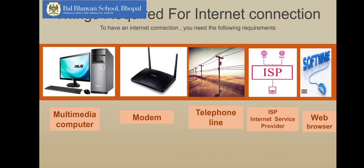Things required for an internet connection — there are a few things which are basically needed. First is your computer. Second is a modem, whose full form is modulator and demodulator. Third is a telephone line. Fourth is ISP, that is Internet Service Provider, which is a company that provides internet to you. And fifth is a software, that is a web browser.